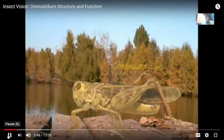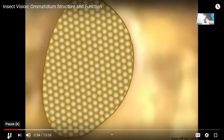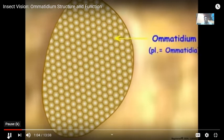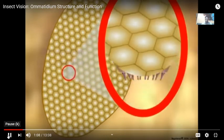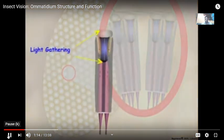The main visual structure of insects is the compound eye. The compound eye appears to be comprised of many hundreds or thousands of tiny facets. Each facet is actually the corneal lens for an individual photoreceptor unit called an ommatidium. Let us look at the detailed structure of an ommatidium. An ommatidium is divided into light-gathering and light-detecting components.